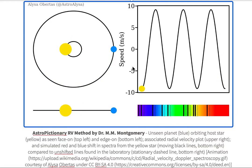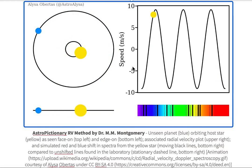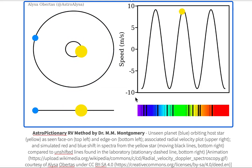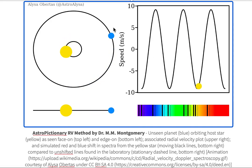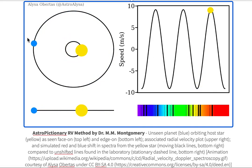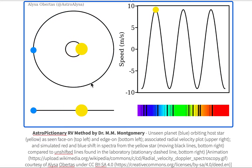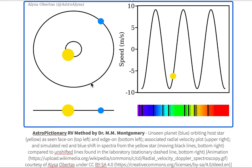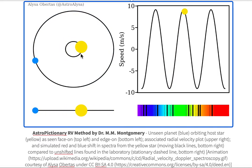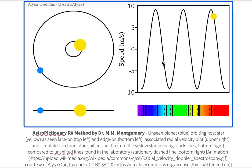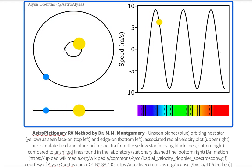So this is how qualitatively we determine the radial velocity method. Radial velocity means that the star has to be moving towards us and away from us. If we had a face-on situation with no inclination, there's no component of towards or away — we're only looking at the star making circles in the sky. We would get no radial velocity plot at all, just a flat line at zero.